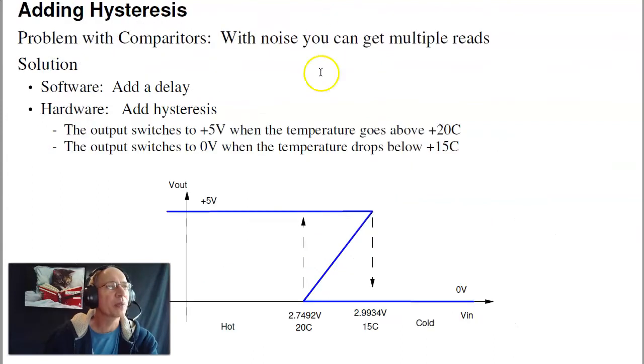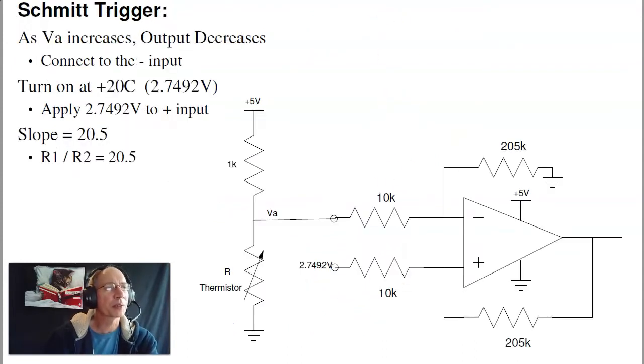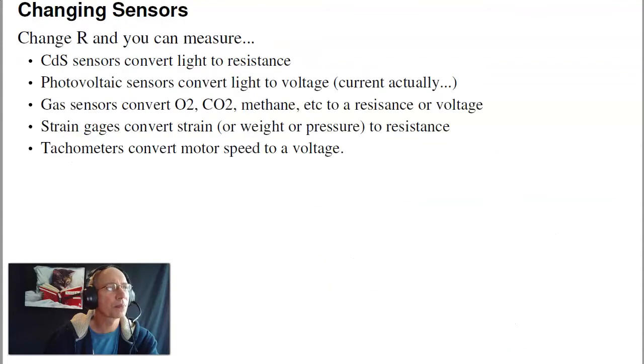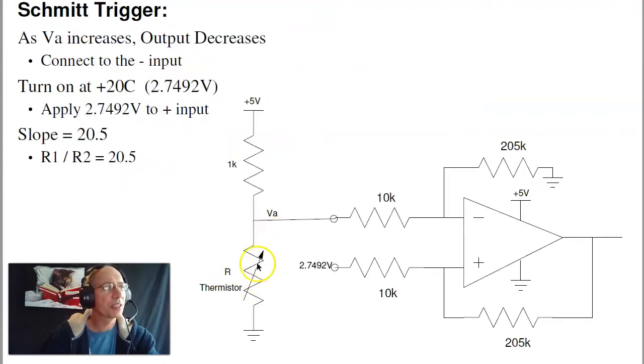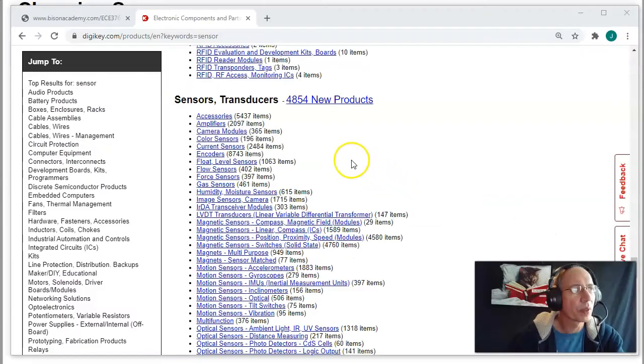And what that'll do is the same thing we had before. As light goes up and down, gets brighter and dimmer, I'll count. But I won't get those multiple counts anymore. The neat thing about sensors is just change that resistor. Change this guy right here. And instead of switching on temperature, I can switch on light, like I did in the demo. Or I can switch on magnetic fields or other things.